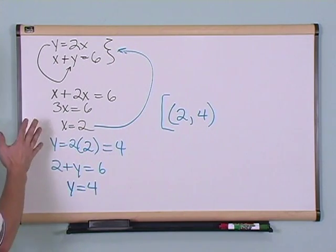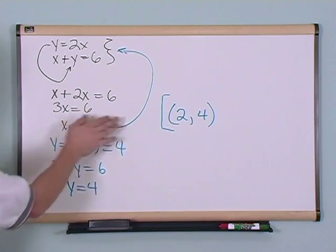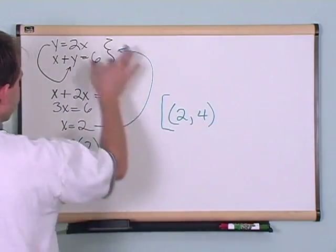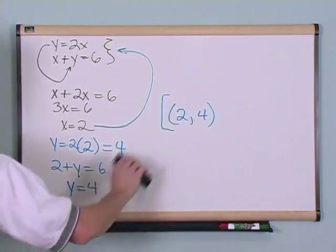And what you've done here is you've proven that these two numbers, 2 comma 4, is a solution of this system, and of course if you were to plug these numbers back in, you would find that it is satisfied.